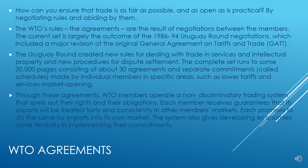Looking more closely at WTO agreements: the question is how to ensure trade is as fair and open as possible — by negotiating rules and, very importantly, abiding by them. The WTO's rules are the result of negotiations between members. The current set is largely the outcome of the 1986–94 Uruguay Round, which included a major revision of the original GATT. The Uruguay Round also created new rules for dealing with trade in services and intellectual property, and new procedures for dispute settlement. The complete set runs to some 30,000 pages.